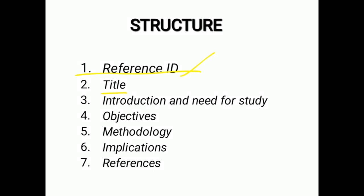Second is the title, which should be very crisp and clear — anyone who sees your proposal should immediately understand what you are going to do. Next is the introduction and need for study. In the introduction, write what the literature is already saying and why the study needs to be done. No need to create a separate heading for 'need for study' — just include it within the introduction, paragraph-wise.